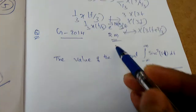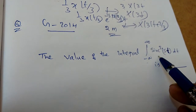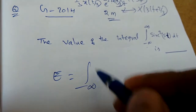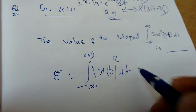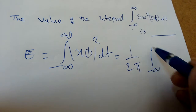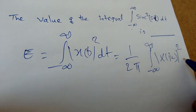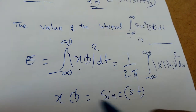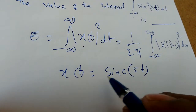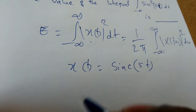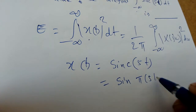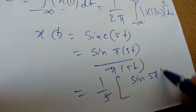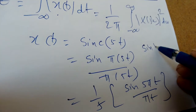This problem came in GATE 2014 for 2 marks. Find the value of the integral from −∞ to ∞ of sinc²(φt) dt. The moment you see an integral of a squared signal, you should recognize it as energy: ∫|x(t)|² dt = (1/2π)∫|X(jω)|² dω by Parseval's theorem.